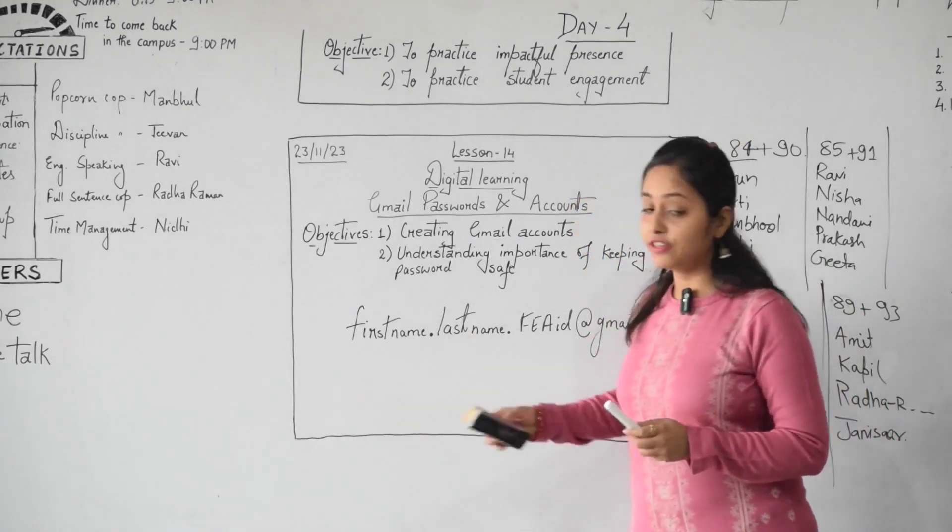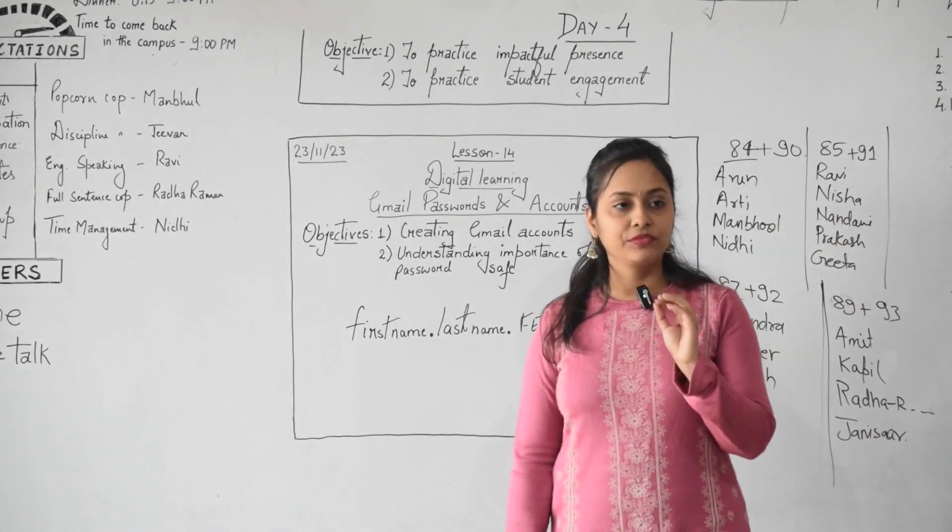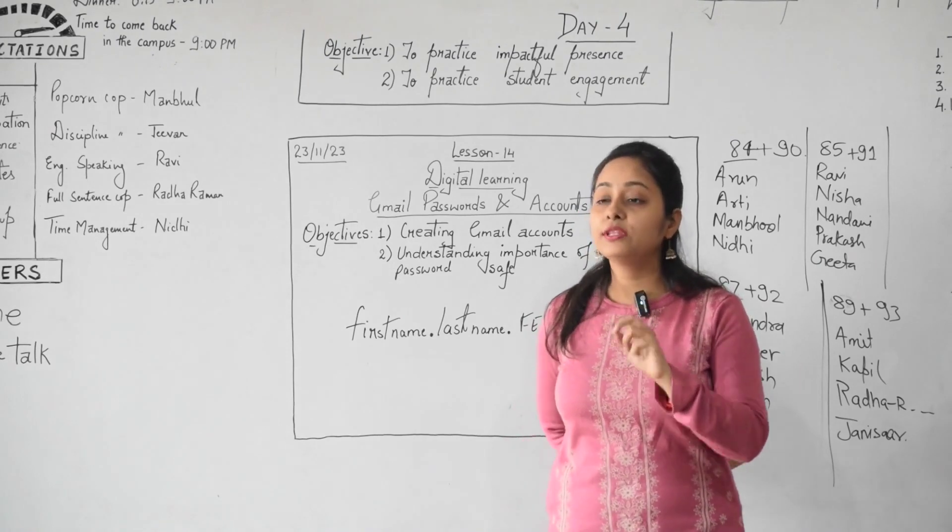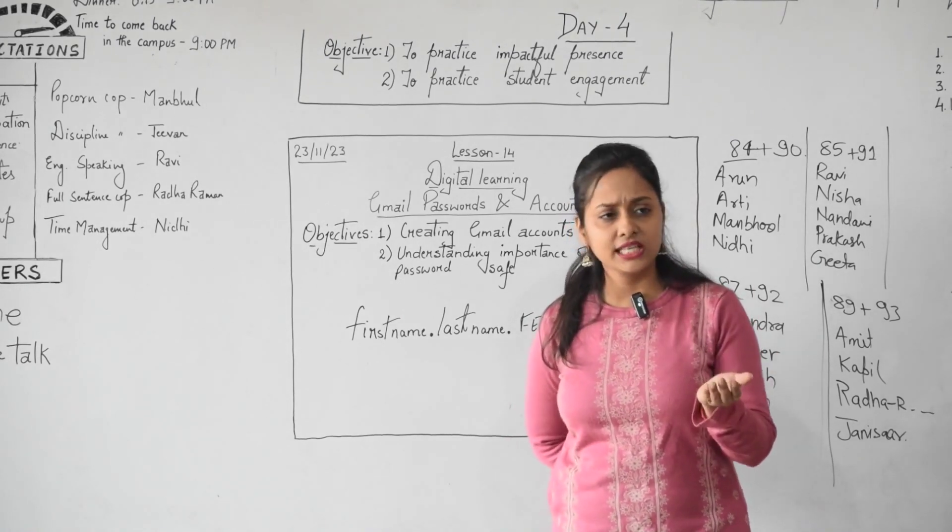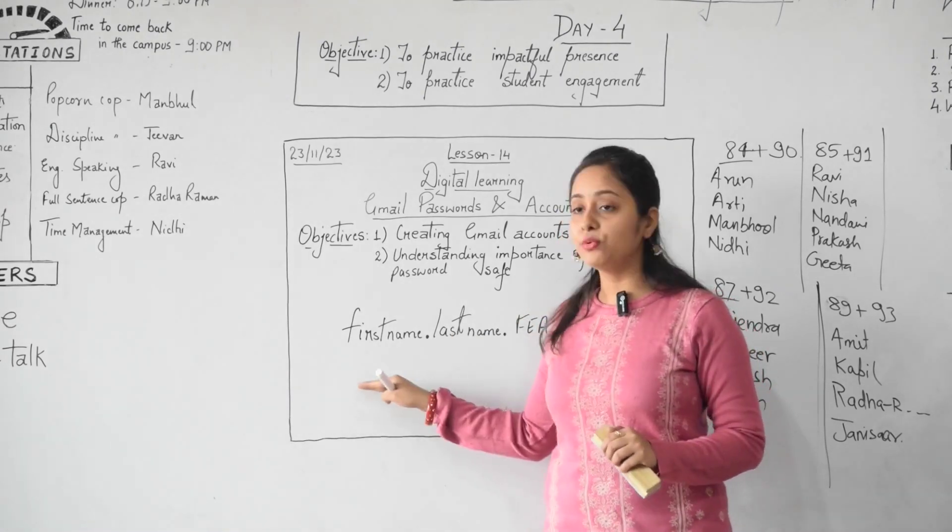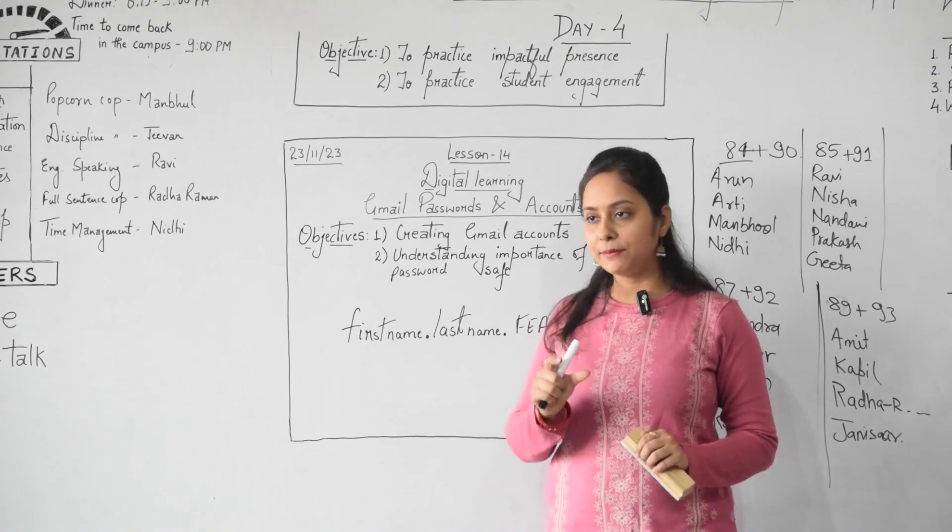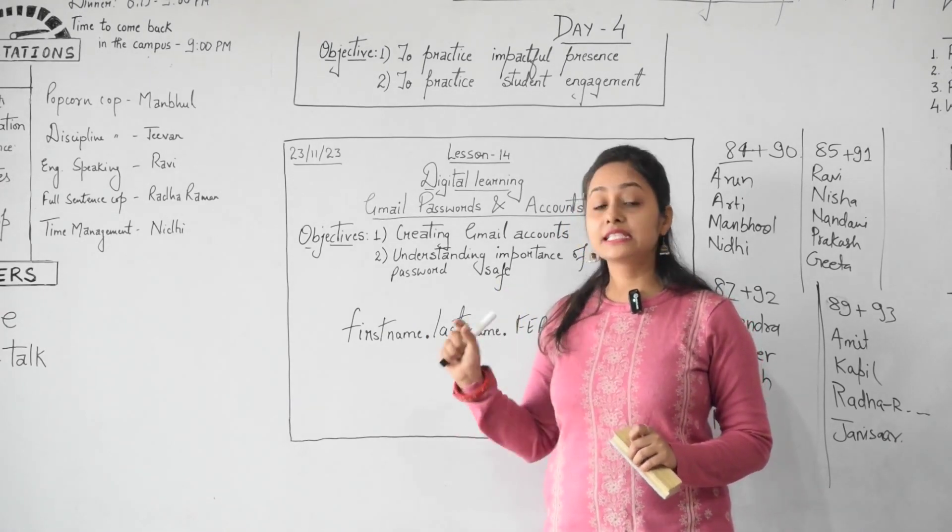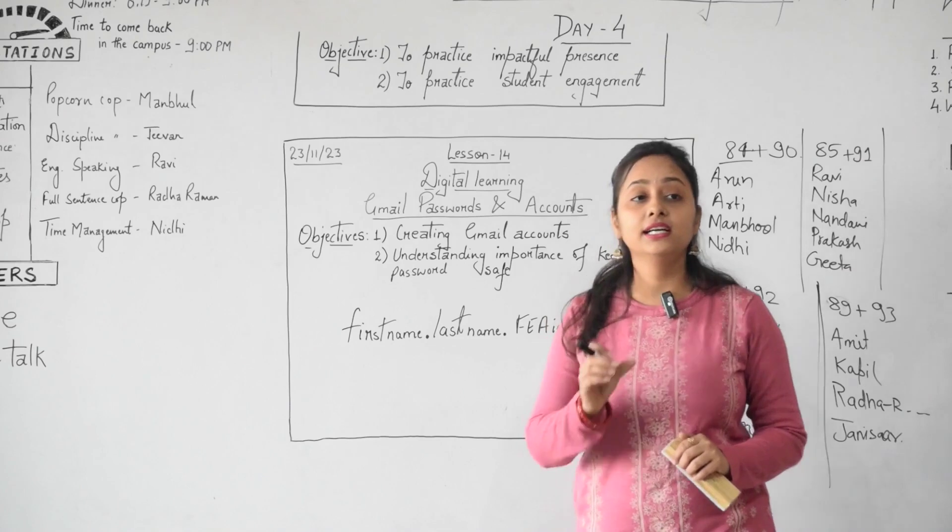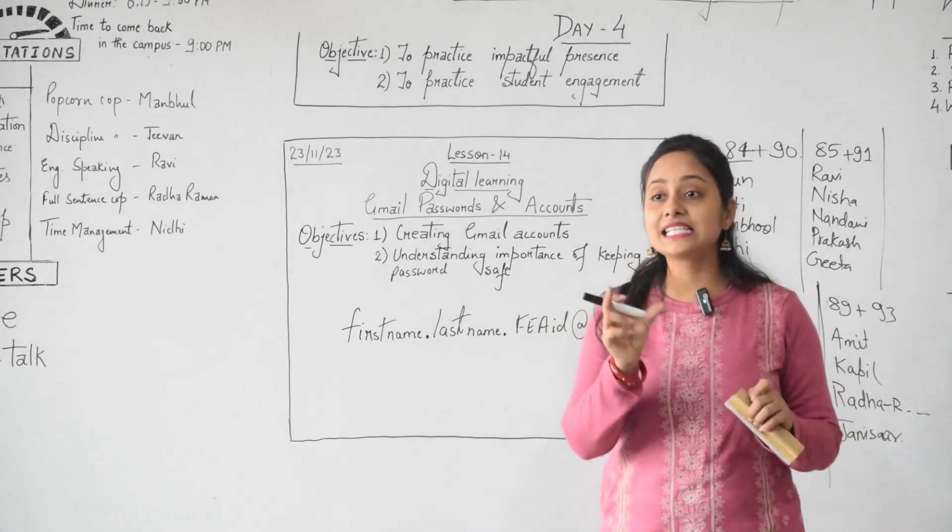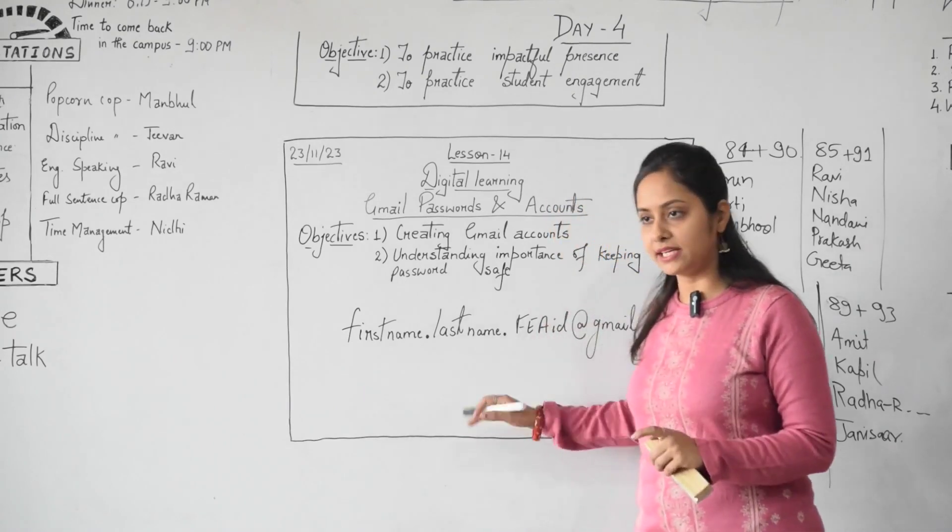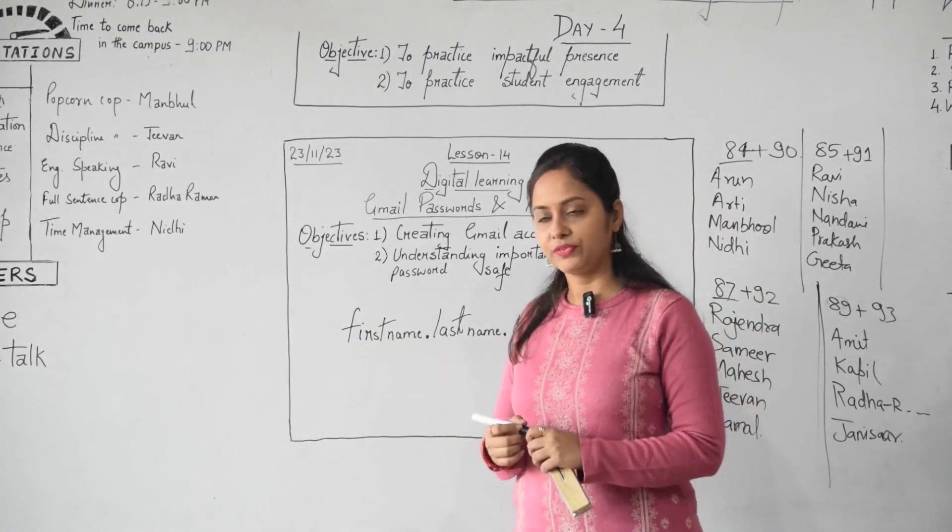We need to include... First of all, whenever you are going to create your password, set the password for your email IDs. First one is you have to use both uppercase and lowercase. What is uppercase and lowercase? Uppercase is capital letter and lowercase means small letters. So whenever you are going to set your password, you need to use capital letters, you need to use small letters, symbols and some numbers. These three things should be there and your password should be of minimum eight characters. Whether you are using symbols, letters or digits, it should be minimum eight. After that you can even have more than eight characters.